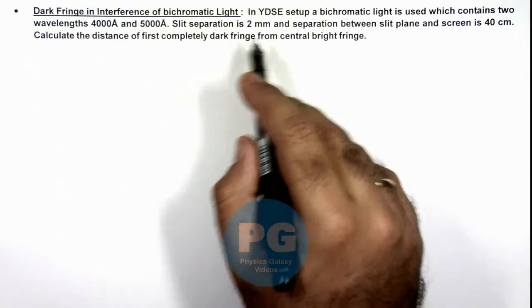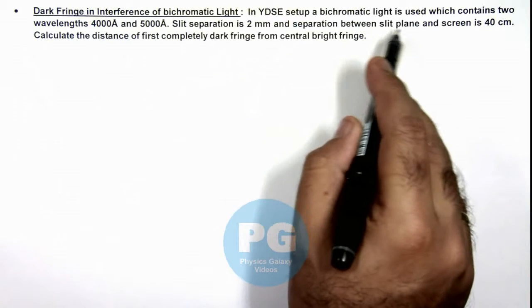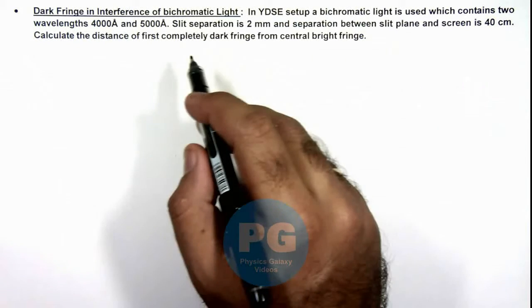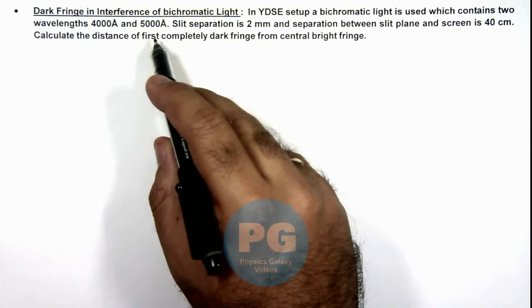We are given that in YDSE setup, a bichromatic light is used which contains two wavelengths: 4000Å and 5000Å.